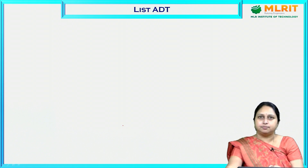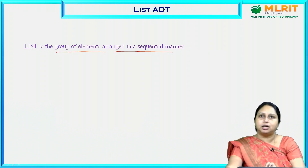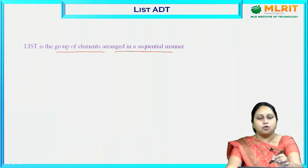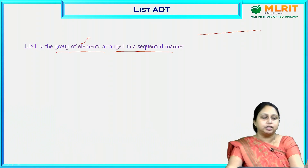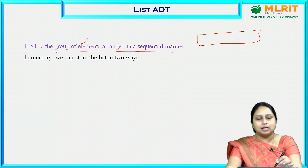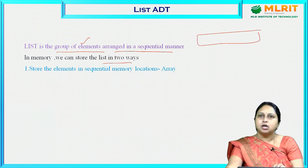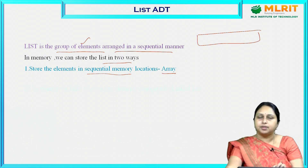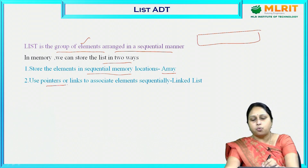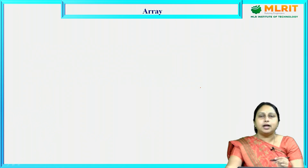Now let us look into what is List ADT. A list is a group of elements arranged in a sequential manner. We can store a list in two ways: one is by storing elements in sequential memory locations using arrays, and the second is by using pointers or links — that method is nothing but the linked list.